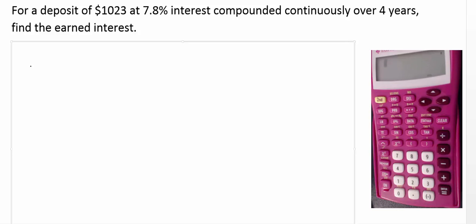Anytime we have continuously compounded interest, we're going to use the formula capital A equals capital P, E to the RT.